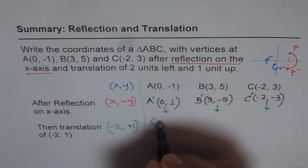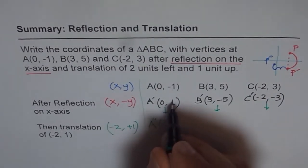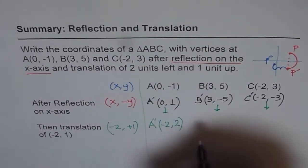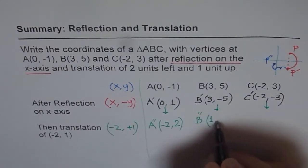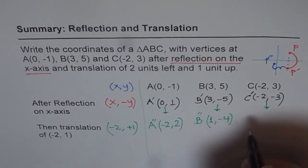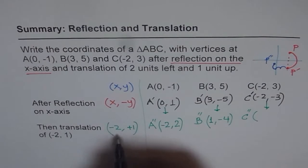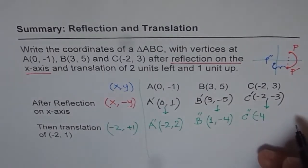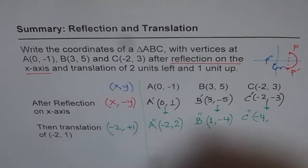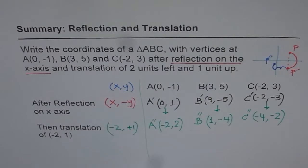So A'' will be minus two from here, which will be minus two, add one, so we get two. B'' will be, take away two, you are left with one, add one, so it becomes minus four. And C'' is going to be, take away two from minus two, so it becomes minus four, more negative. And then plus one, less negative. So these are our final points.